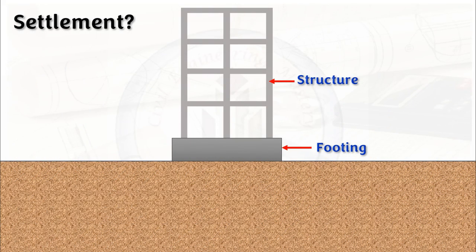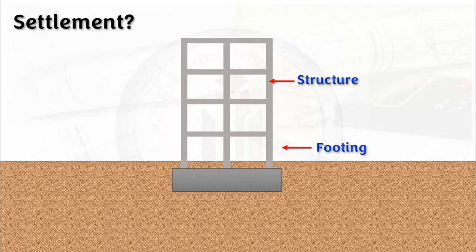First, let us start with what is settlement. When you take a structure, all the loads will be transferred to the footing or foundation of that structure. The foundation has to resist the load coming on it. If the foundation is not capable of resisting the load, the structure tends to sink into the soil. So, this vertical movement of the structure is called settlement.